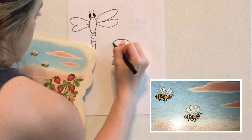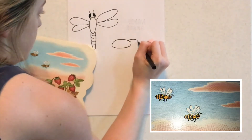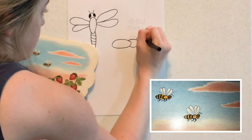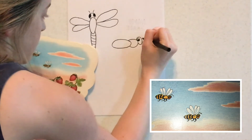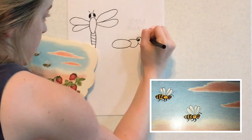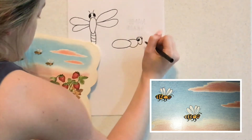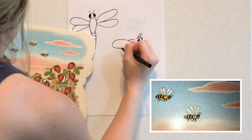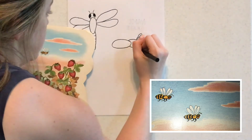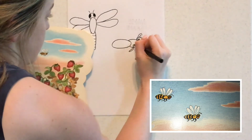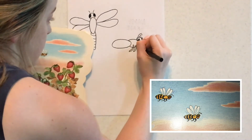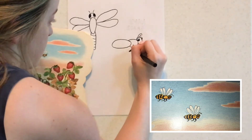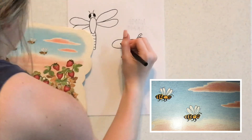Next I'll draw the bee. I notice that its body is made up of two ovals. Its head is also made up of an oval, and its eyes are two circles. The bee also has two antennas, which I'll draw using lines. I'm going to finish drawing the bee by looking for shapes within its body and drawing what I see.